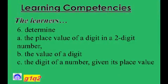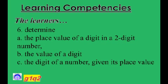Number 6: The learners determine the place value of a digit of a two-digit number; B, the value of a digit; and C, the digit of a number given its place value.